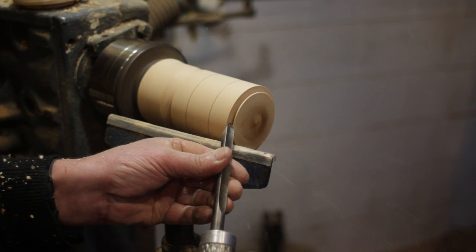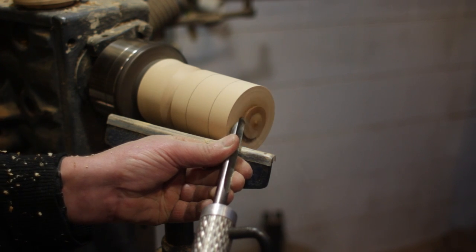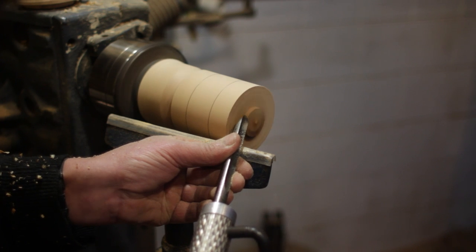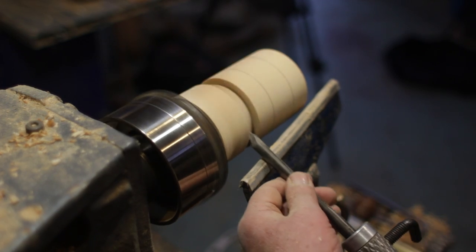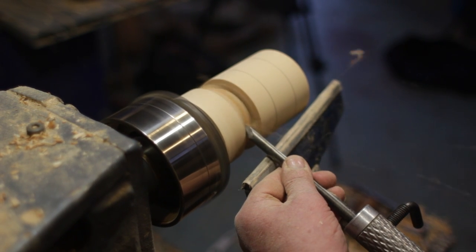Now with the spindle gouge we can cut away the waste and reveal that tenon. Be careful not to take any more material off. And we do the same on the other end revealing the tenon there.